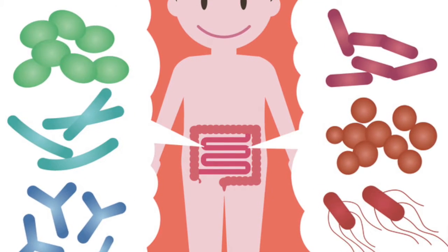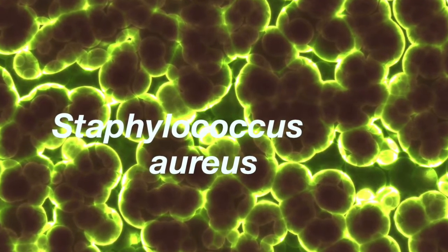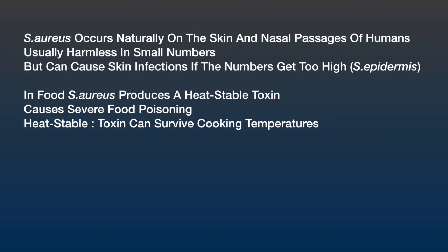Internal flora refers to the makeup of various bacteria in our gut that allows us to consume our food — these basically keep bad pathogens at bay. However, there are strains of E. coli that are dangerous, such as E. coli O157:H7. In general, E. coli is a bacteria that should be avoided at all costs. Because E. coli mostly occurs in our guts and raw meats, it becomes an indicator of unhygienic practices — for example, not washing hands after using the toilet or after handling raw meats.